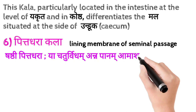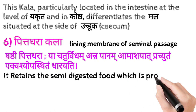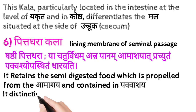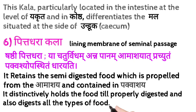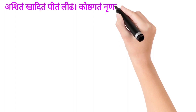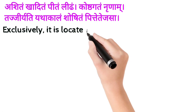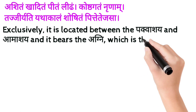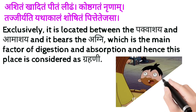Here is our sixth Kala, Pitha Dharakala, which can be correlated with the lining of the seminal passage. Its shloka says this Kala retains the semi-digested food propelled from Amashay and contained in Pakvashay. It distinctively holds properly digested food and digests all types of food — Asit, Peed, Khadit and Leh. The second shloka — 'Asitam khaditam peetam lidham, kosht gatam niranaam, tadjiryati yathakalam shoshitam pit tejasa' — says it is located between Pakvashay and Amashay and bears the Agni, the main factor of digestion and absorption, and hence this place is considered as Grahani. You will have to learn both shlokas.